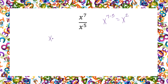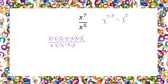The reason this works is because on top you have 7 X's that are multiplied together, and on the bottom you have 5. They simplify out — 2, 3, 4, 5 — leaving you with only X squared on top, just like what you got when you subtracted.